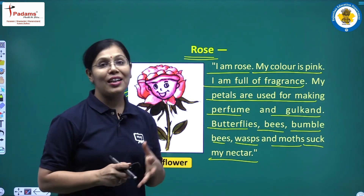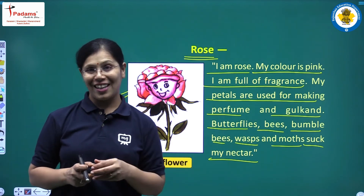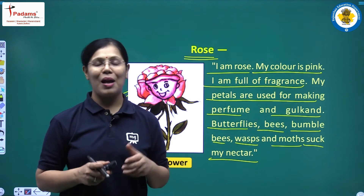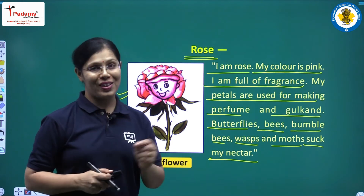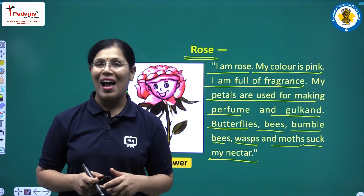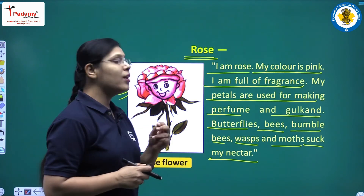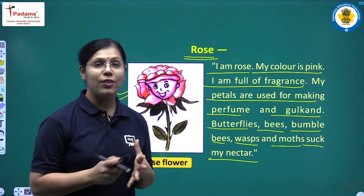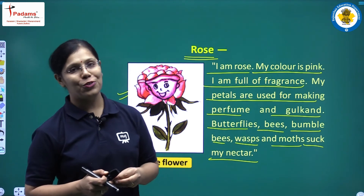Rose flower said that I am rose, my colour is pink and I am full of fragrance. Rose flower has a very nice fragrance. My petals are used for making perfume and gulkand. Students, remember that rose flower petals are used to make perfume and gulkand. The rose flower also told Khushi that different insects like butterflies, bees, bumblebees, wasps and moths sit on this flower and suck its nectar.